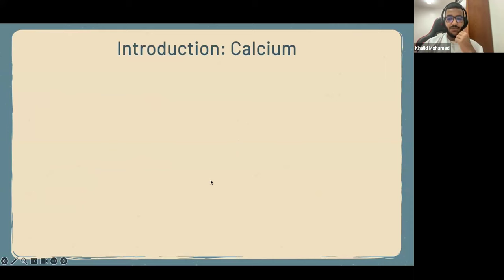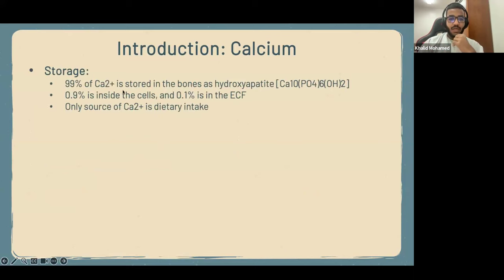Bone also houses the hematopoietic tissue, or the bone marrow, where red blood cells and white blood cells are formed. It also helps in the regulation of some hormones. Now, calcium is one of the very important ions in our body. Its storage — 99% of it — is in the bone as hydroxyapatite.